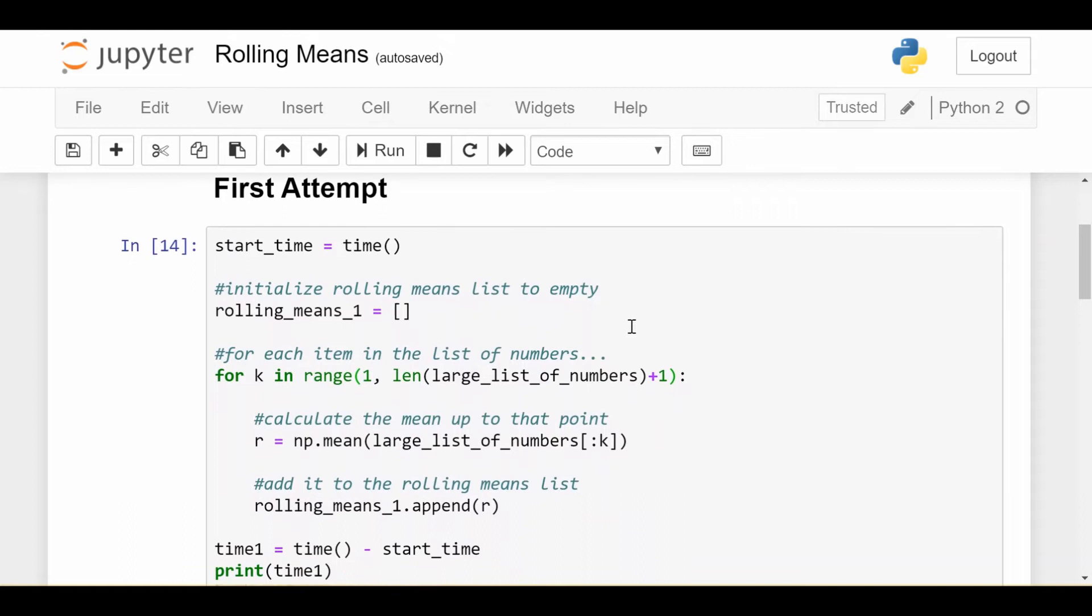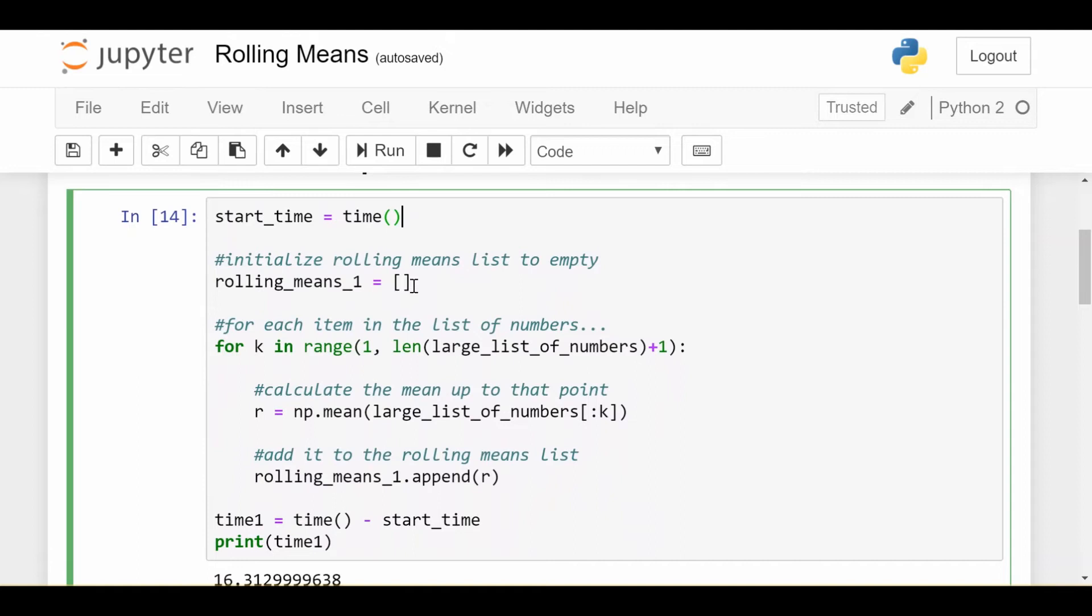So here's our first attempt from when we did it on the whiteboard. This is our naive attempt. So we go ahead and start the timer. This is all commented for your benefit, but I'll explain it as well. We initialize a rolling means list to empty. Here it's called rolling means one because this is the first attempt at this problem. Then we enter this big for loop. So for each k in one to the length of the list plus one, we go ahead and calculate the mean up until index k. So this notation, if you haven't seen it, just means take all the numbers in my big list of numbers up until index k and then store the mean of that in this variable r and then simply append this rolling mean to my list of rolling means.